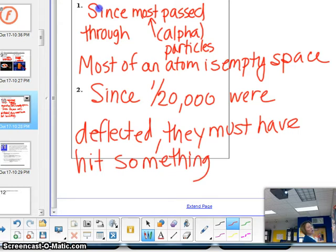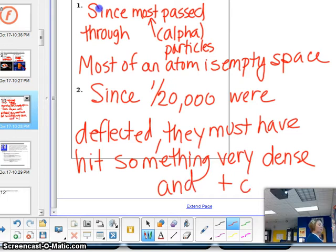And indeed, that something must be really, really dense. Otherwise, how would it be able to deflect something moving so fast with so much energy? So it must be super dense, and it must be positively charged.